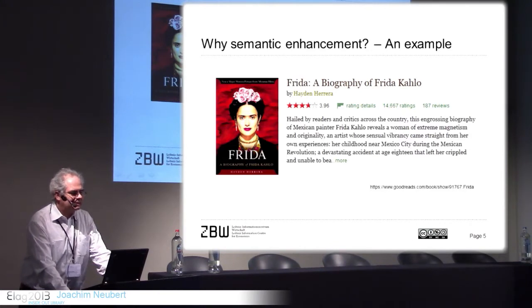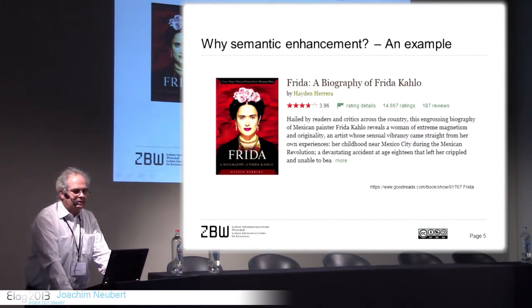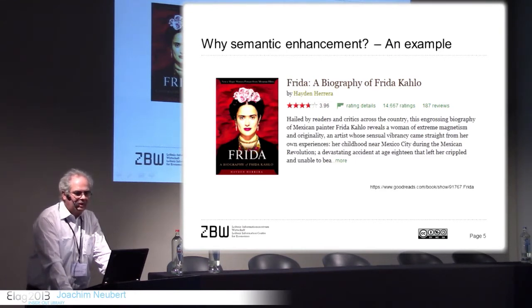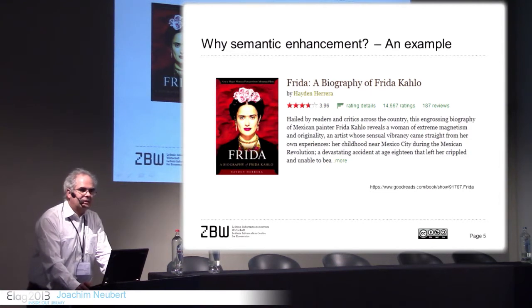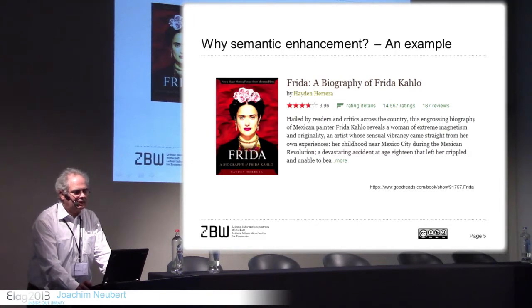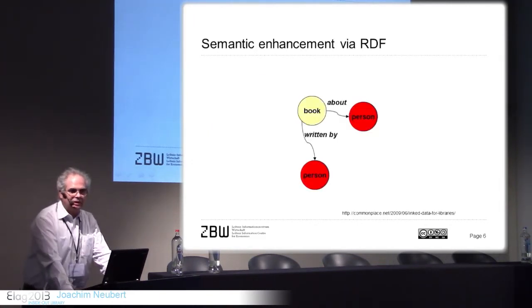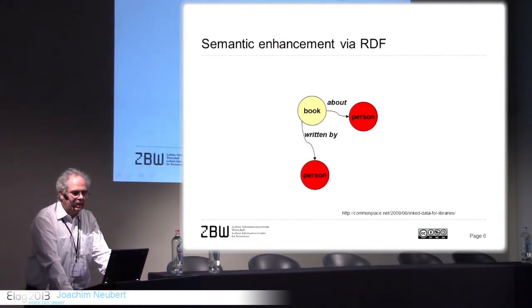If you have a look at this webpage for humans, it's clear at the first glance — it's a page about a biography written by Haydn Hedera about the Mexican painter Frida Kahlo. For a machine, that's just guessing. Is the subject a book, a painting, a person, the relation of two persons?